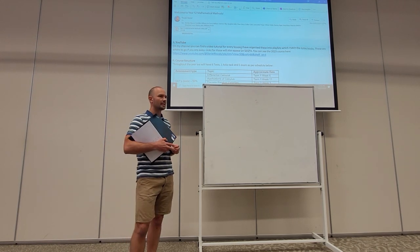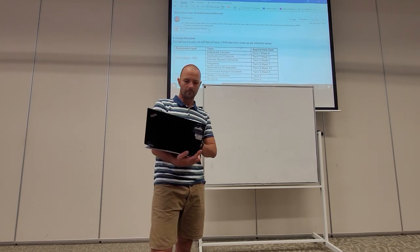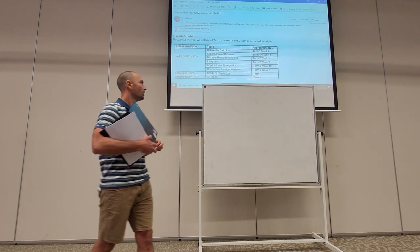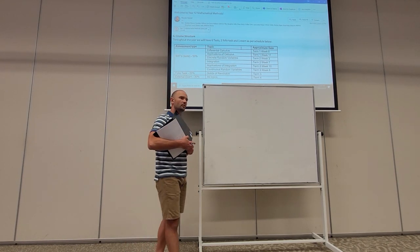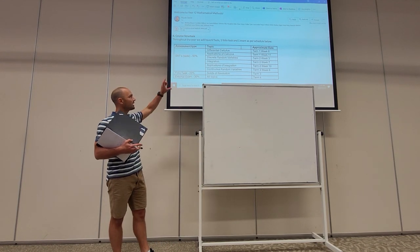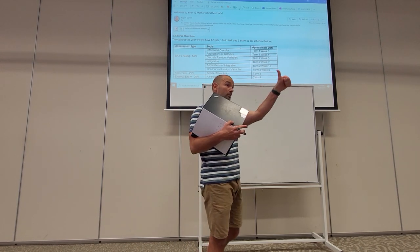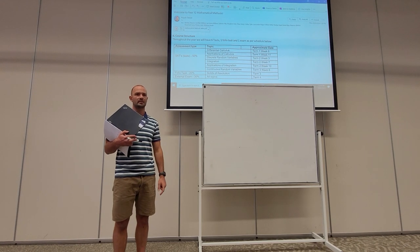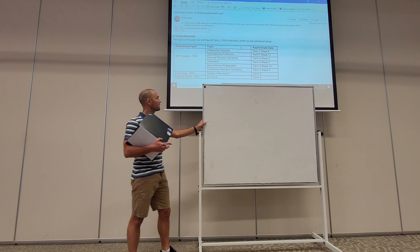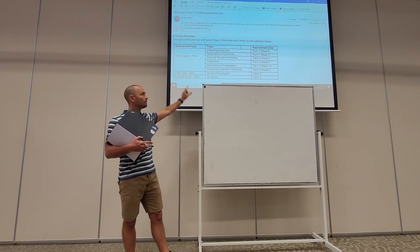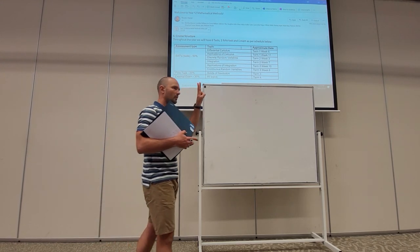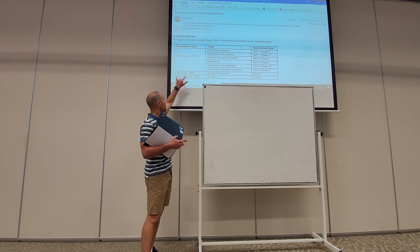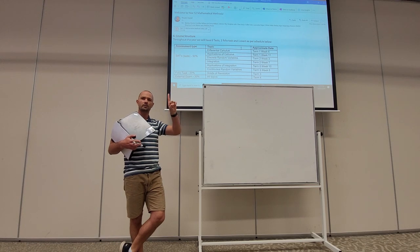Those will be uploaded to Sector where you can see them and catch up. Looking at the course structure — our plan for the year — we have six tests worth a total of 50 percent of your grade, so each test is 8.3 recurring percent. The first two tests this semester are specifically on calculus: the rules of calculus, then applications of calculus. Following that we do a bit of statistics — discrete random variables.